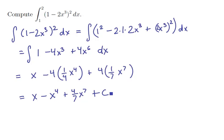Now that I have an antiderivative, I can use the fundamental theorem of calculus to solve the definite integral. The definite integral from 1 to 2 of (1 - 2x³)² equals [x - x⁴ + (4/7)x⁷] evaluated from 1 to 2.